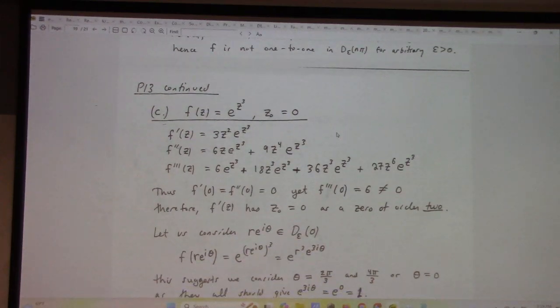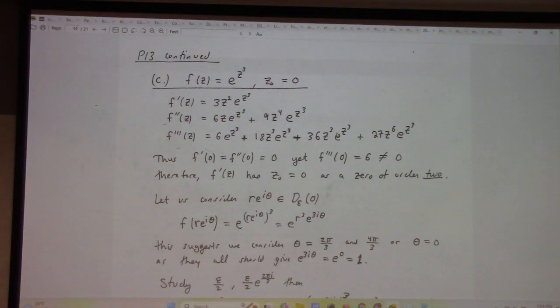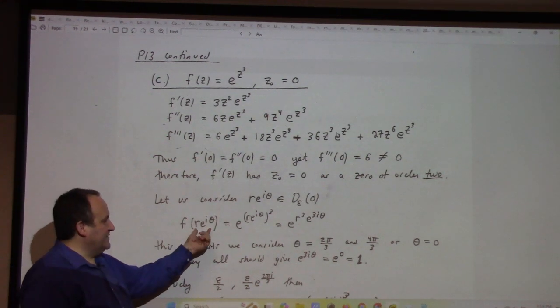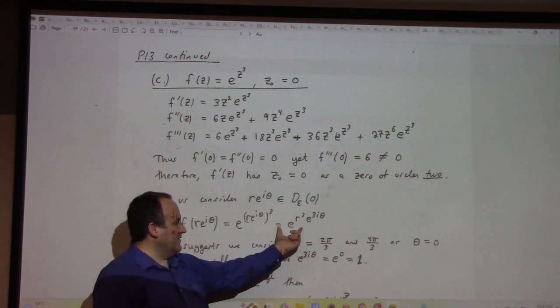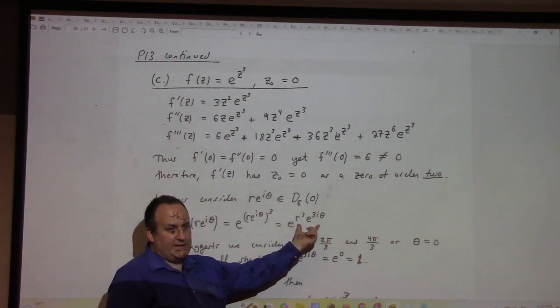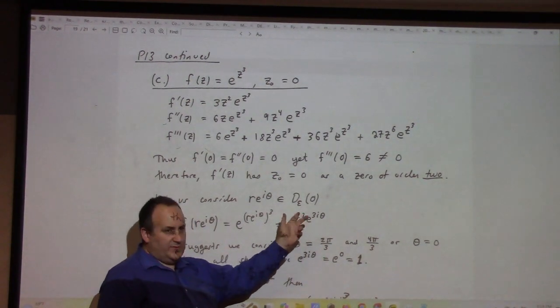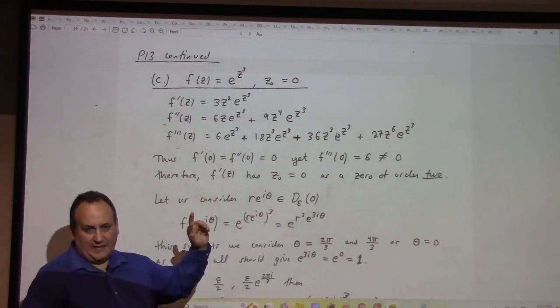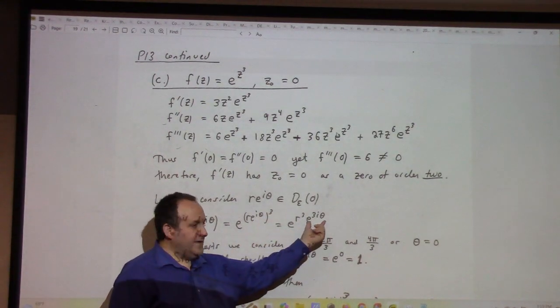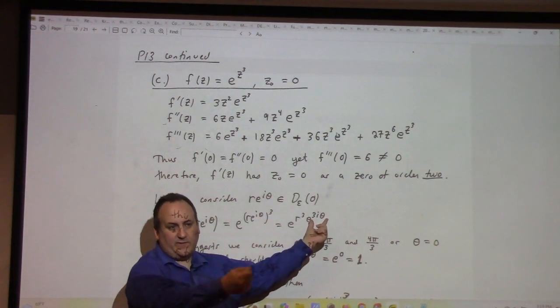And this one is a little bit trickier, but I thought about what am I trying to accomplish. I'm plugging in something, and when I work out what that looks like, it's e to the r cubed, e to the 3i theta. I want to choose different inputs that give me the same output. To make that happen, I just need to have different thetas giving me the same output for e to the 3i theta.